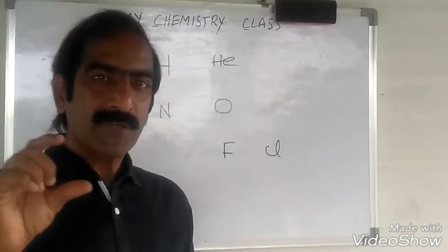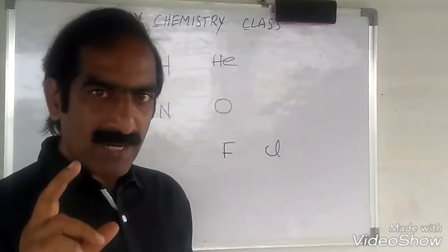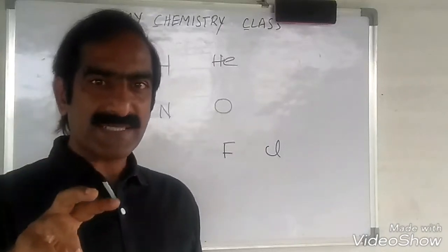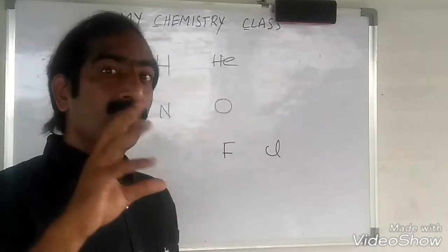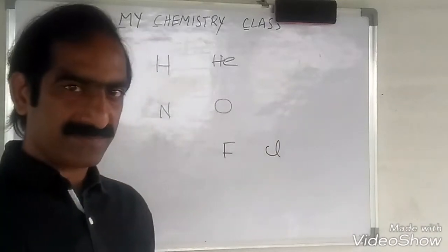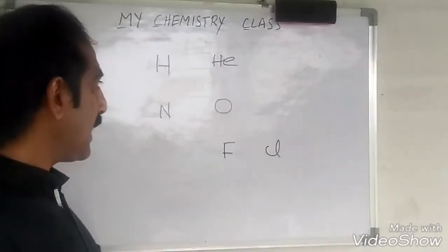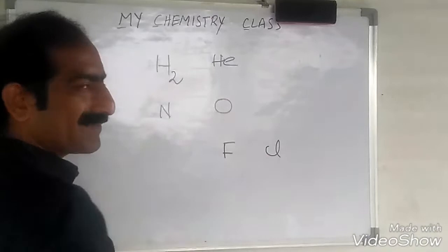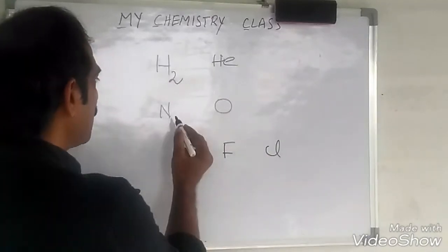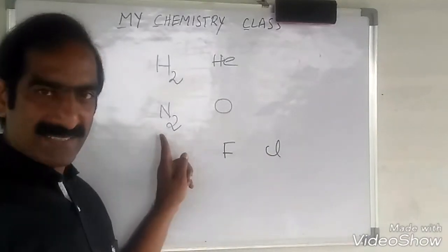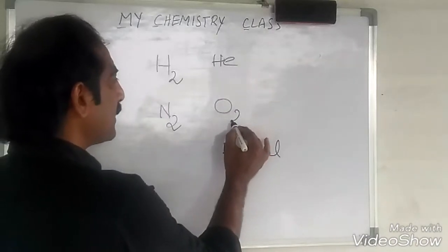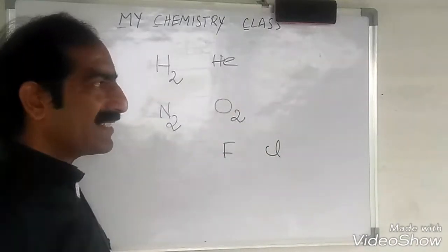But few elements exist as dimers. Have a look — which element exists as dimer? Hydrogen exists as dimer, like H2. Nitrogen exists as dimer, N2. Oxygen exists as dimer.